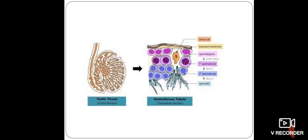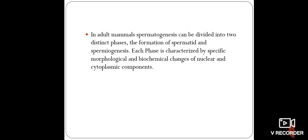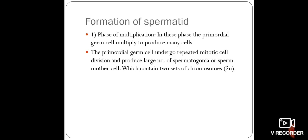Each phase is characterized by specific morphological and biochemical changes of the nucleus as well as changes in the cytoplasm. The differentiation of primordial germ cells into spermatids involves three distinct phases: namely, the phase of multiplication, phase of growth, and phase of maturation.